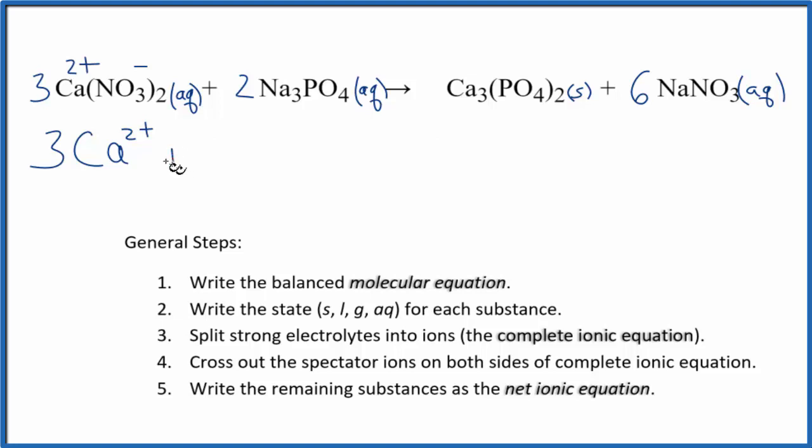Plus we have the nitrate ion, NO3 minus. And we have two nitrate ions times three. Two times three is six. So we have six nitrate ions.